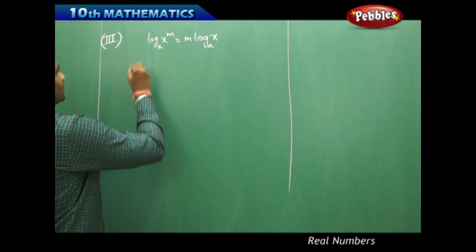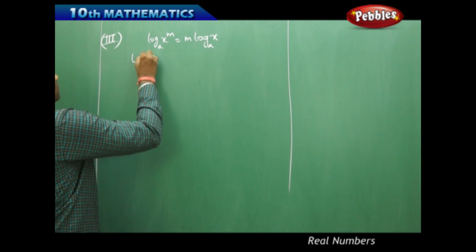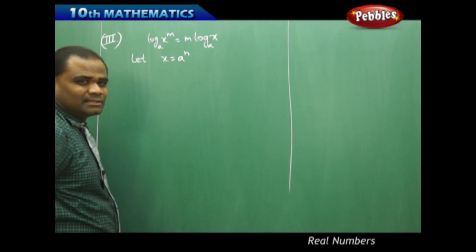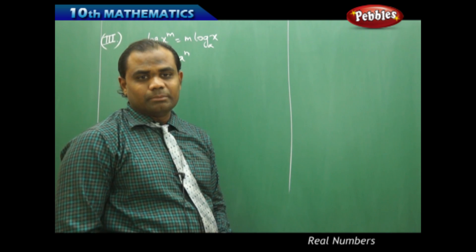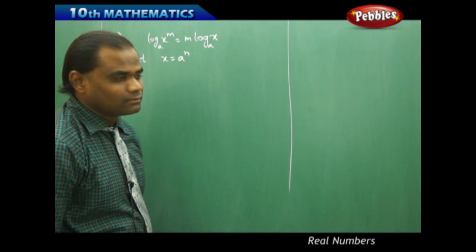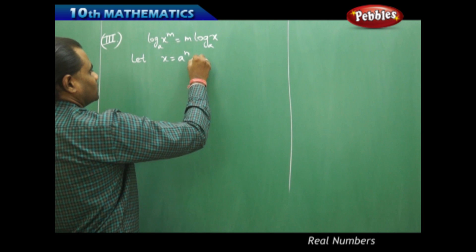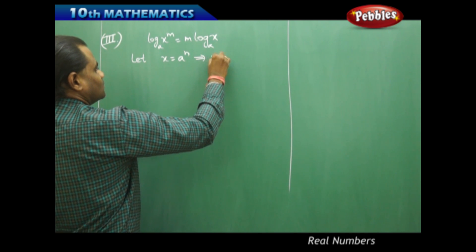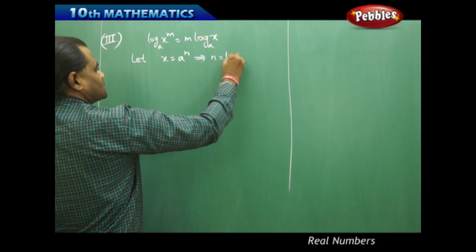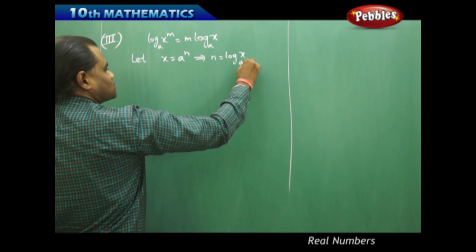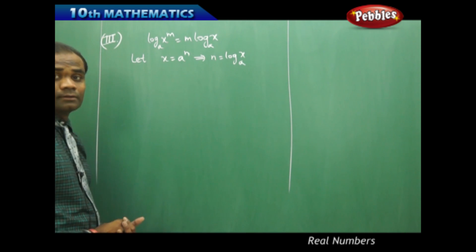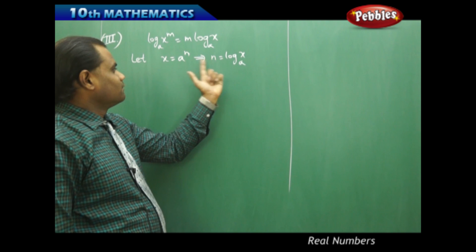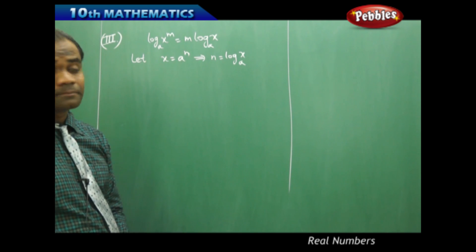We have already taken that x is a to the power n. Using this, when I convert this into logarithmic form, I understand that n equals log x to the base a. When I convert this exponent to logarithmic form, I have n equal to log x to base a.